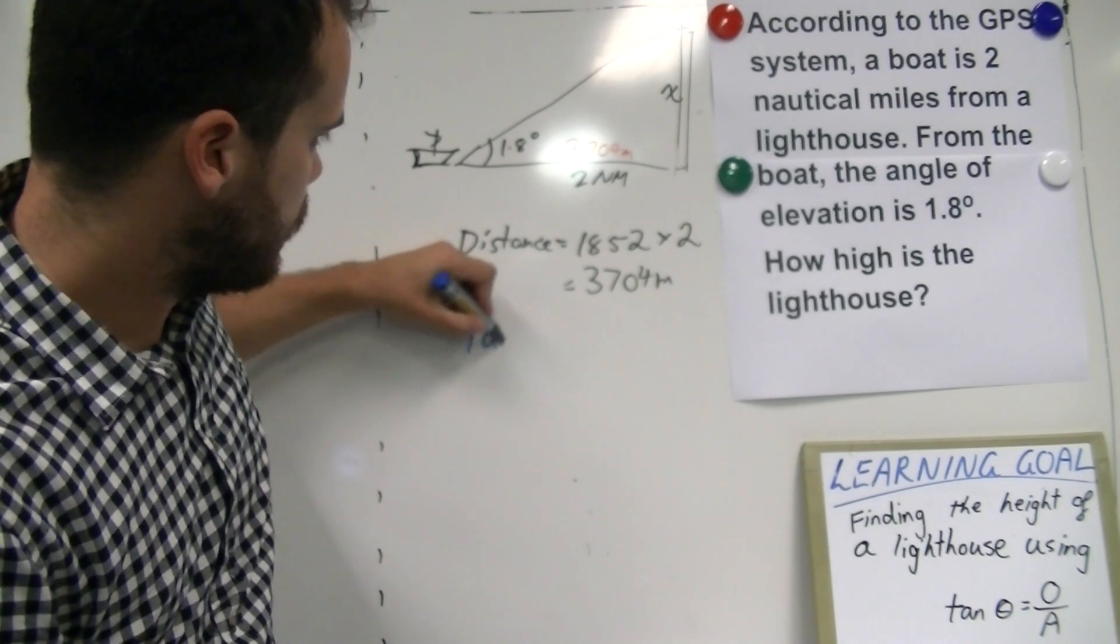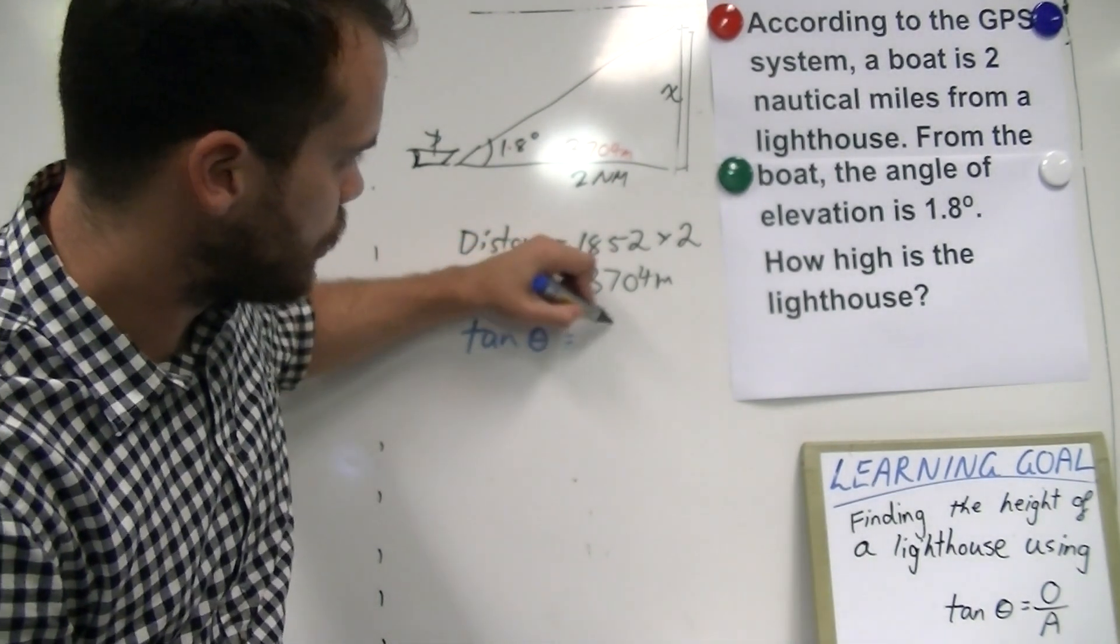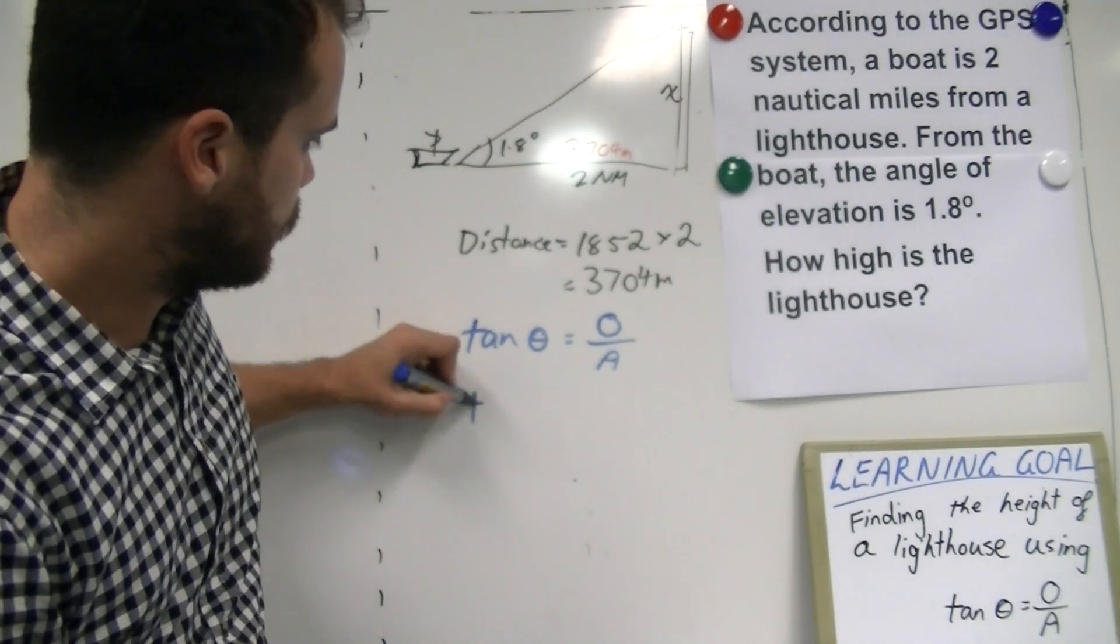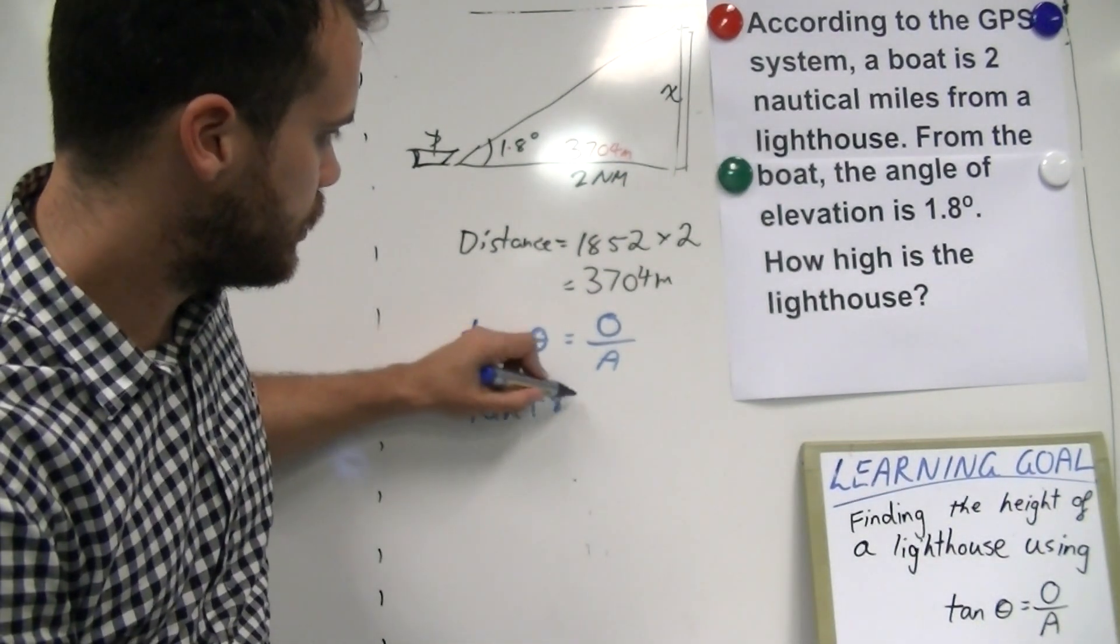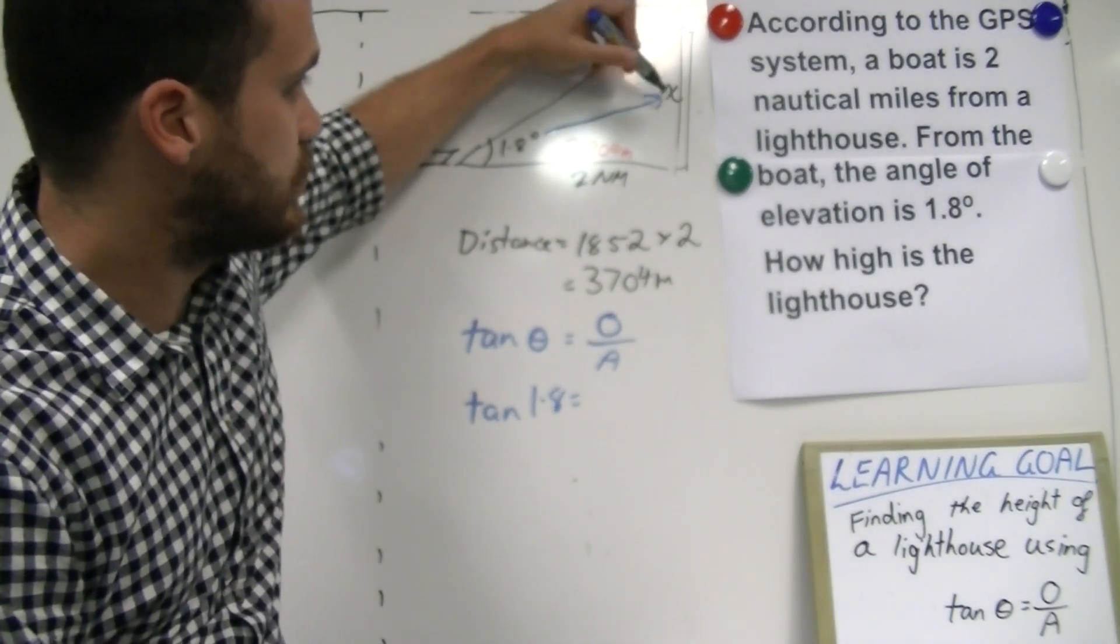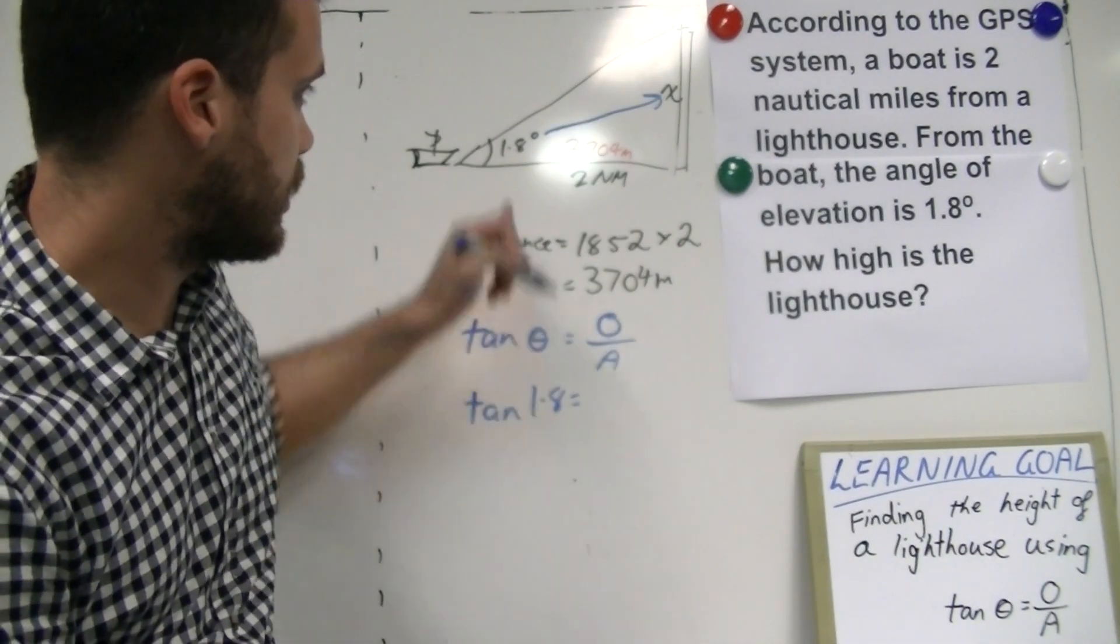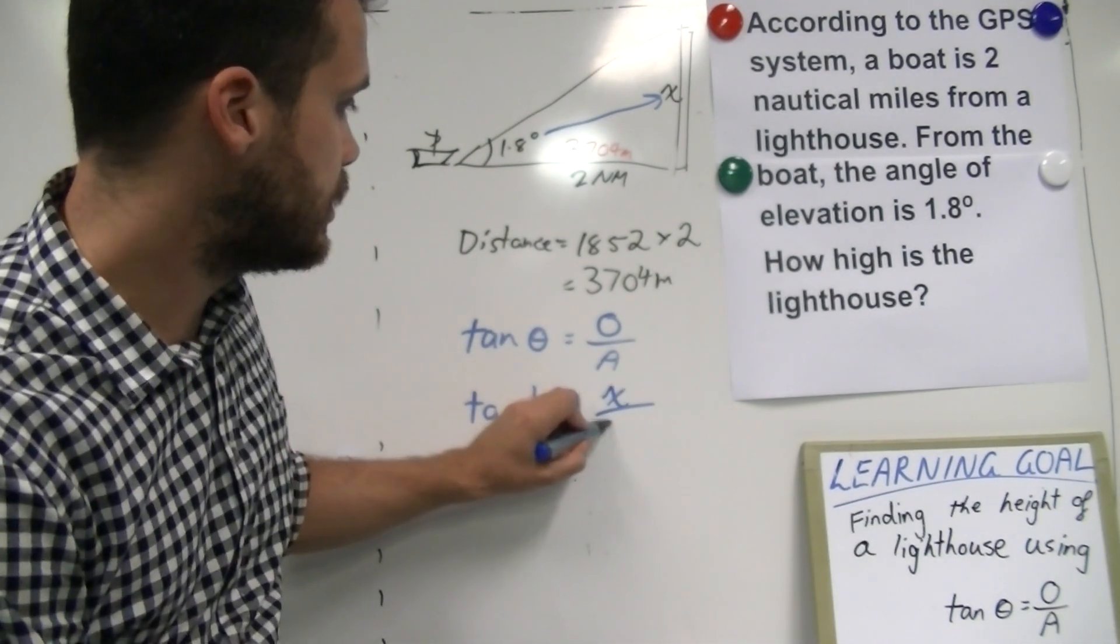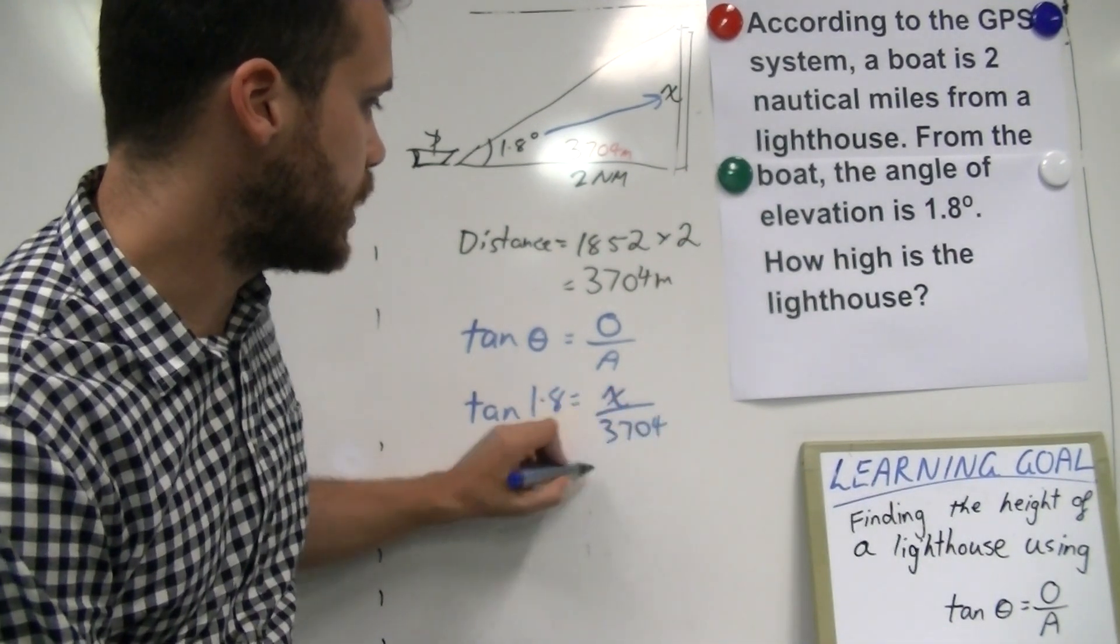So, tan theta equals opposite over adjacent. Now, we know our angle. That's 1.8. We don't know the opposite. Remember, the opposite is directly opposite that angle there. So, that's x. Now, we know adjacent. We know that it's 3,704 metres.